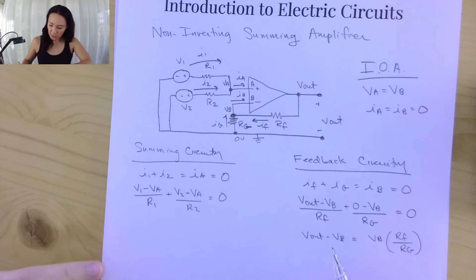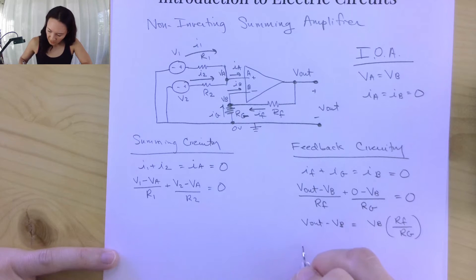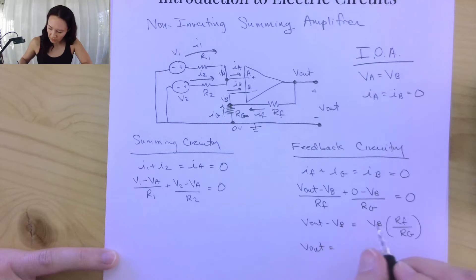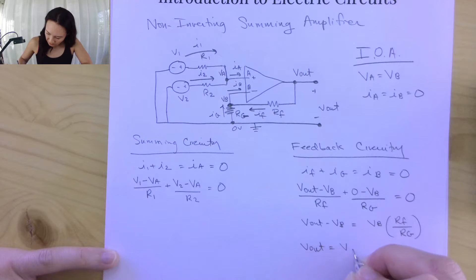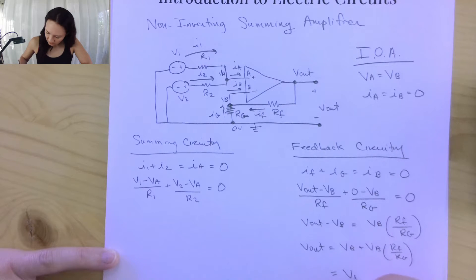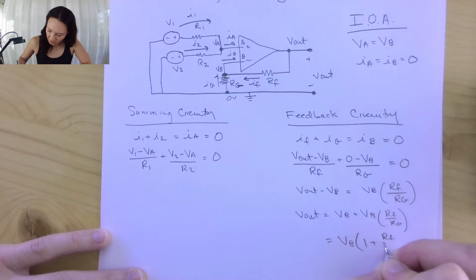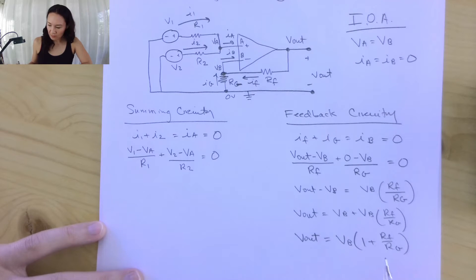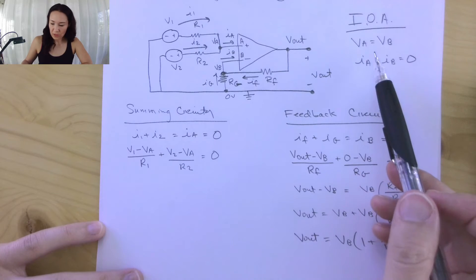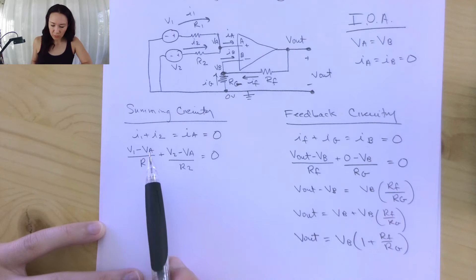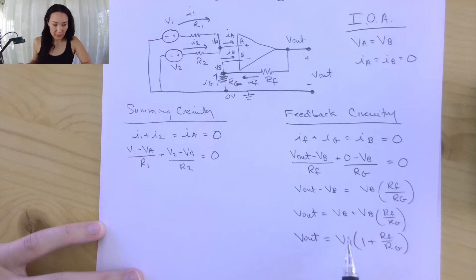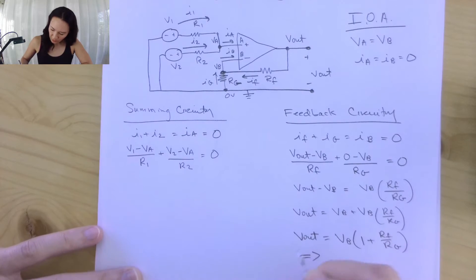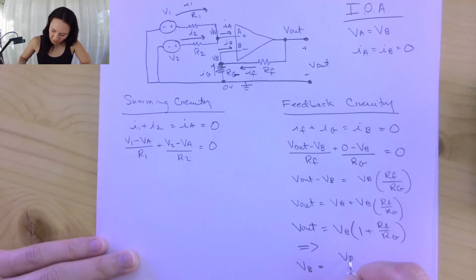I bring the VB term over to get Vout by itself. So Vout equals VB plus VB times RF over RG, which is VB times the quantity 1 plus RF over RG. This gives me an equation for the output in terms of the B input of the op-amp. Rearranging, this implies that VB equals Vout over the quantity 1 plus RF over RG.